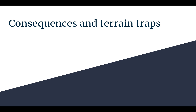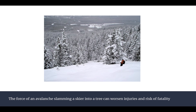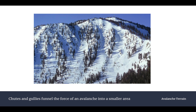Next I'll talk about consequences and terrain traps — a section of avalanche safety that often gets overlooked. You have to focus not only on what's above you but what's below you. A very obvious terrain trap is cliffs: if an avalanche sweeps you off your feet and over a cliff, even a small one, you hit the ground with tremendous force, greatly worsening your consequences. Trees at the end of an open slope are also dangerous — if an avalanche carries you into trees at speed, the impact can significantly worsen injuries and increase fatality risk.